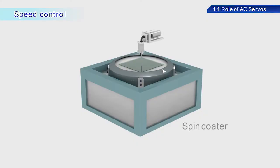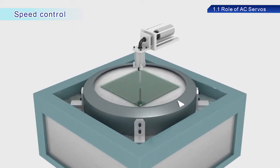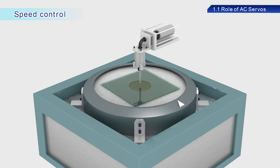Let's now cover speed control. Speed control is used, for example, with devices known as spin coaters, which are used to manufacture semiconductor circuits. Spin coaters apply a liquid solution to a flat substrate and then spread the solution evenly over the entire surface using centrifugal force.